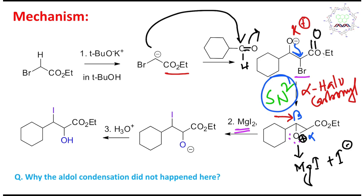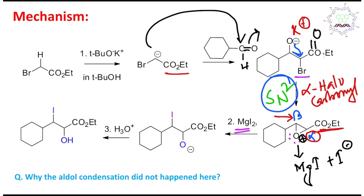Now, the positive charge density is expected to be higher at the beta carbon rather than the alpha carbon, because the alpha position is in close proximity to the CO₂Et group, which can stabilize positive charge through electron withdrawal. The beta carbon, attached to another alkyl group, cannot dissipate the charge as effectively — so nucleophilic attack is preferred at the beta carbon, opening the epoxide there.